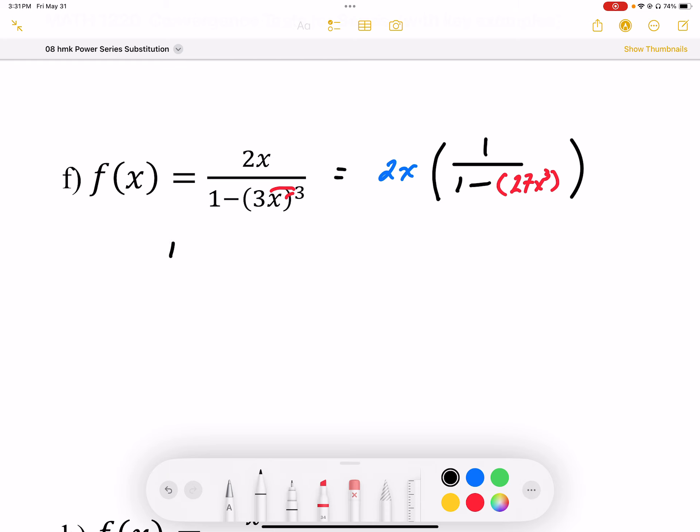So now I can try to put this in the sigma form. From n equals 1 to infinity, I'm going to have that 2x. I'm going to put that in there like that because it's going to multiply every term. And then this part represents my x to the power of n minus 1, and I'm going to replace that with 27x cubed.